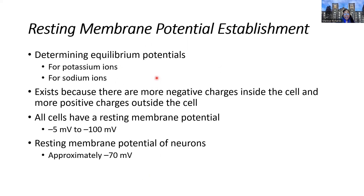We're going to start by thinking about the equilibrium potential for two ions: potassium and sodium. There are a lot of other ions moving across a cell — chloride, calcium, and so forth — but the majority of the resting membrane potential is really impacted by these two ions specifically. We know that the resting membrane potential is the separation of charge.